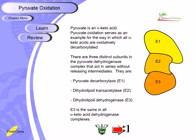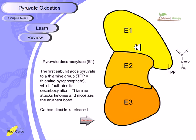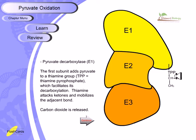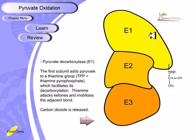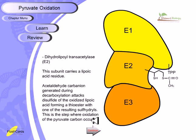In the first subunit, pyruvate decarboxylase adds pyruvate to TPP (thiamine pyrophosphate). Thiamine pyrophosphate facilitates decarboxylation — it attacks the ketone and modifies adjacent bonds, causing CO2 to be released. The rest of the carbon chain remains attached to thiamine pyrophosphate. In the second step, the acetylated carbon generated during decarboxylation attacks the disulfide of the oxidized lipoic acid, forming a thioester with one of the resulting sulfides.